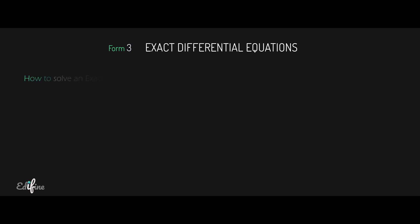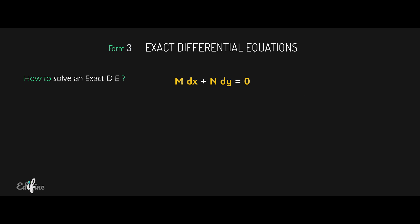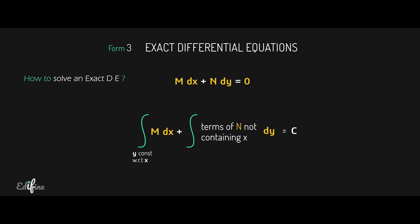Now let us see how to solve an exact differential equation. Suppose we have an exact differential equation of the form M dx + N dy = 0, where M and N are functions of x and y. The solution is obtained using the formula: integral (keeping y constant) of M dx, plus integral of the terms in N not containing x, dy, equals z.